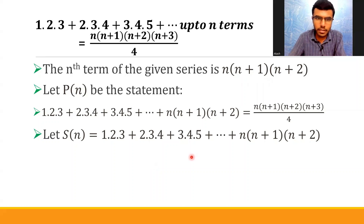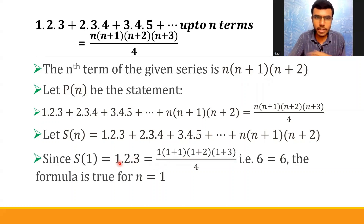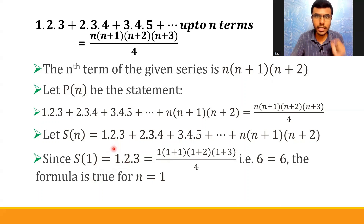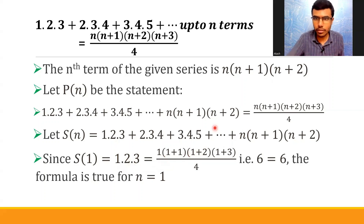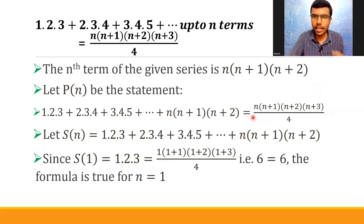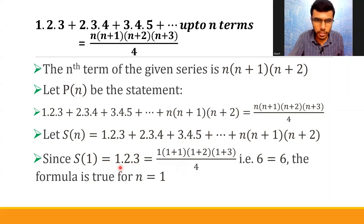Now let's get started. S(1) means I need to take only the first term: 1×2×3. And this is basically equal to the RHS — in the RHS part, you just need to put n=1. Now let's check whether it's really equal or not.